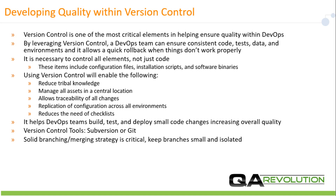Version control is one of the most critical elements in helping ensure quality within DevOps. By leveraging version control, a DevOps team can ensure consistent code, tests, data, and environments, and it will allow a quick rollback when things don't work properly.